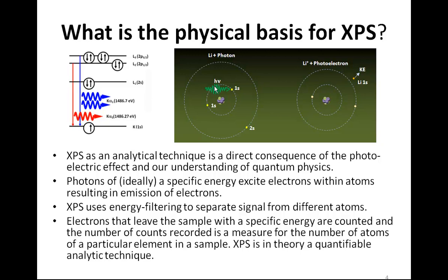This also involves the energy of the photon. If we can identify the energy of electrons that arrive at a detector, we can determine from which atom and which electronic state within the atom that electron originated. We can therefore quantify the sample, because quantum physics allows us to relate the number of scattering events to the number of electrons recorded at a specific energy, telling us the electron came from a particular atom.